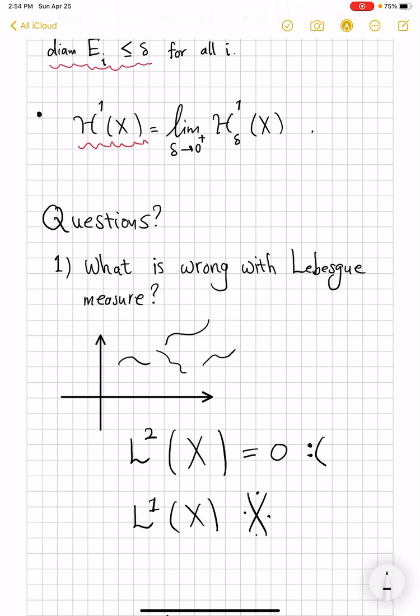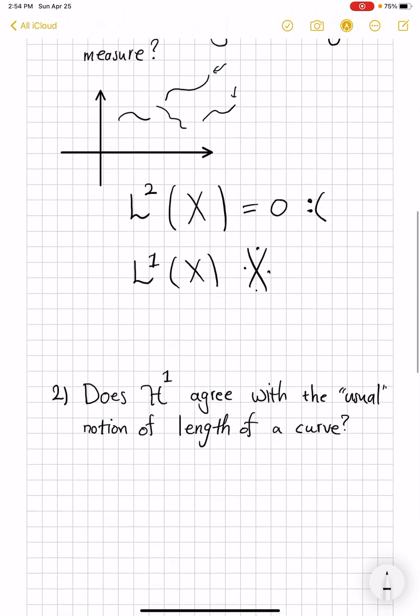To study one-dimensional size of this set, you have to look for something new, and Hausdorff measure is one way of doing that. And the best thing about it is that it also works in arbitrary metric spaces, so it immediately generalizes to all metric spaces.